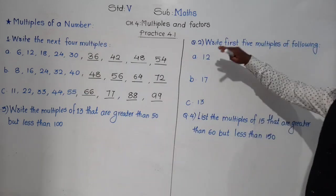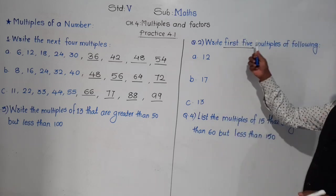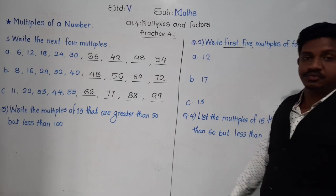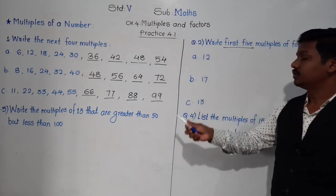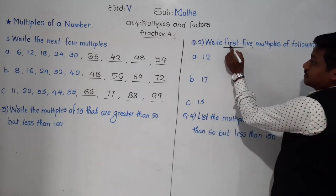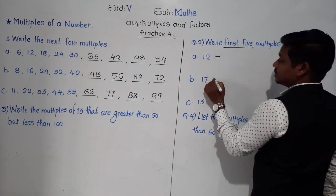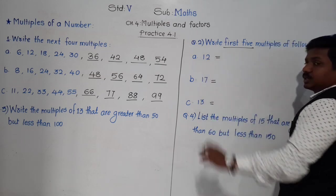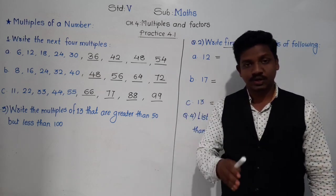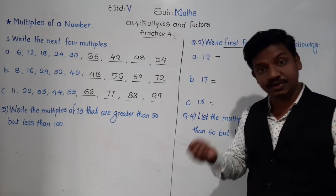Question 2: Write the first 5 multiples of the following. Numbers given are 12, 17, and 13. We have to find the first 5 multiples of each. The phrase 'first 5' is very important. For 12: 12×1, 12×2, 12×3, 12×4, and 12×5.